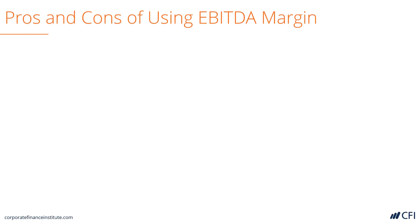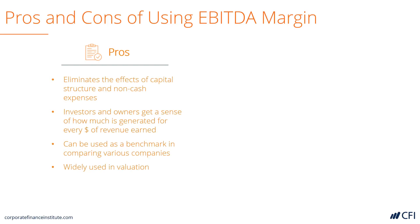Let's look at the pros and cons of using EBITDA margin as a metric. The advantages are that it eliminates the capital structure of a business and non-cash expenses. Because it's before interest, it does not include the effect of debt financing, so it makes companies with different capital structures easier to compare. It gives investors a sense of how much EBITDA there is relative to revenue, so it's much more effective than just EBITDA on its own.